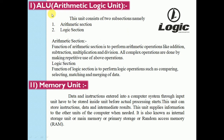The second part of the CPU is the memory unit. Data and instructions entered through the input unit must be stored inside the memory unit before actual processing starts. This unit can store instructions, data, and intermediate results, and supplies information to other units of the computer when required. It is also known as internal storage or main memory.